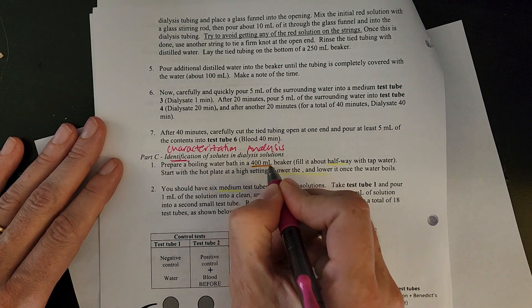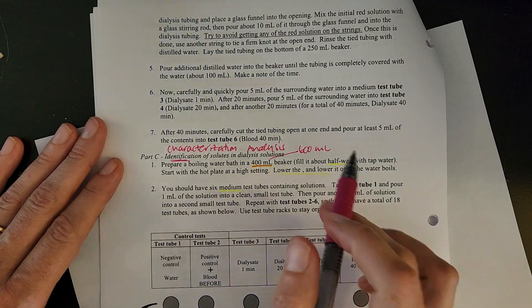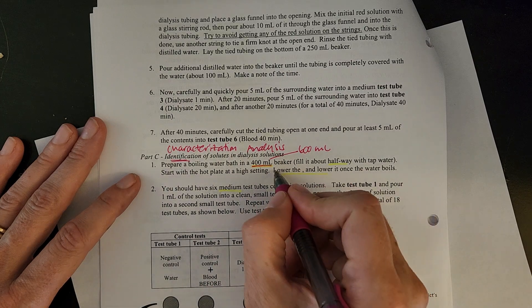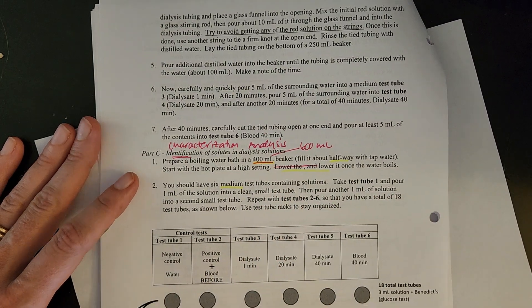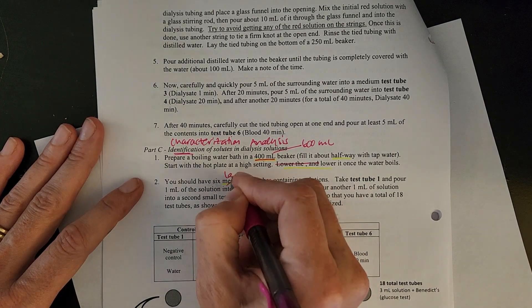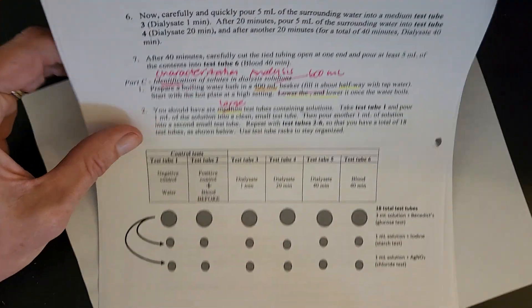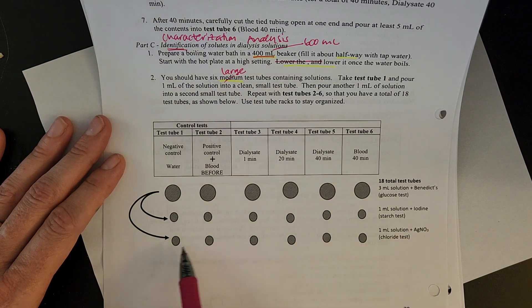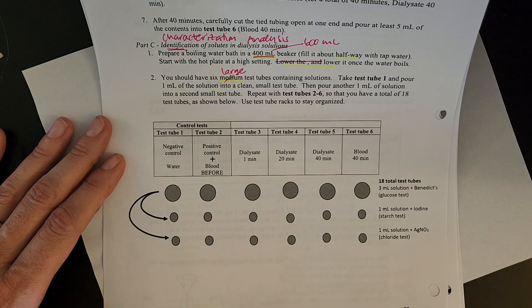Couple things to point out. 400 mil beaker. You may be using a 600 mil beaker instead if we have that. You're going to start with the hot plate on high and then lower it once the water boils. So a little typo there. Again, anywhere you've seen medium test tubes. Remember, we're just calling those large. You're going to have a lot of test tubes out as you can see in this picture here. So six big ones, six small ones, and six more small ones. So you'll actually be borrowing a few of those small test tubes as well.